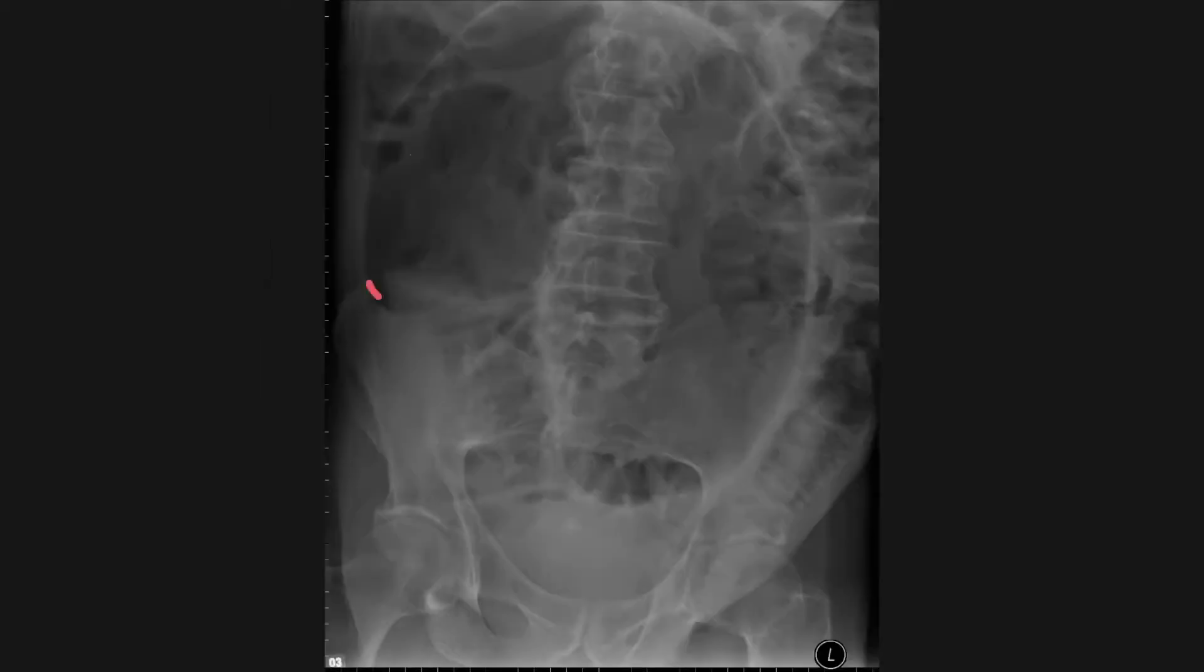So let's take a look at another example. On this frontal x-ray, we have a very dilated gas-filled loop. This has taken the shape of a coffee bean, and actually behind it, we can see these dilated loops of bowel.